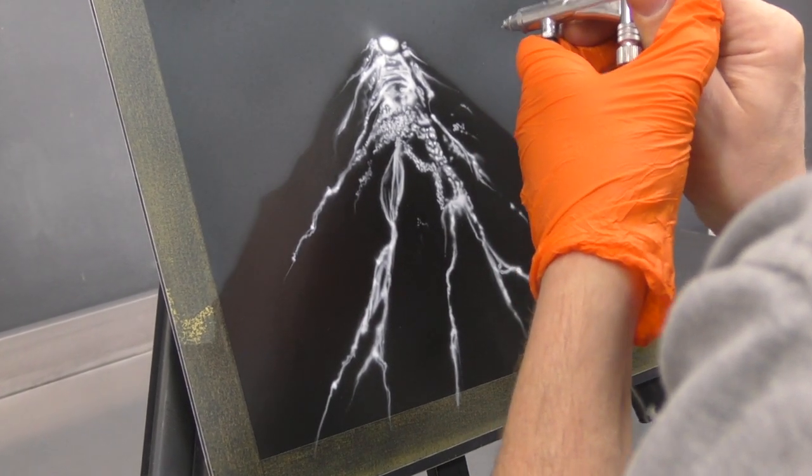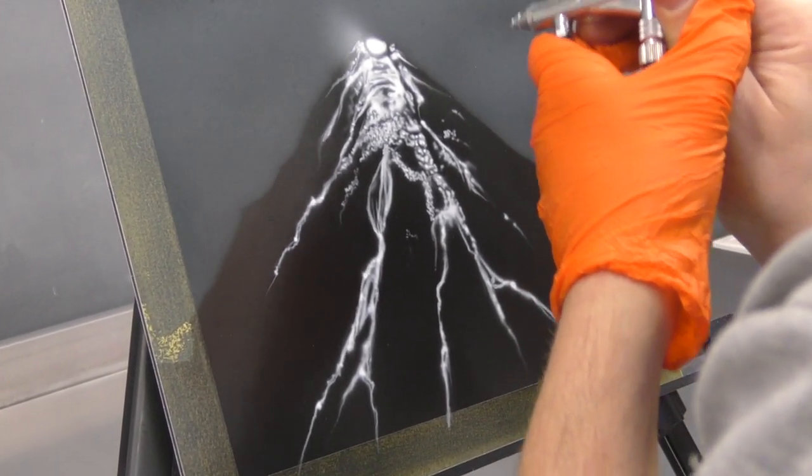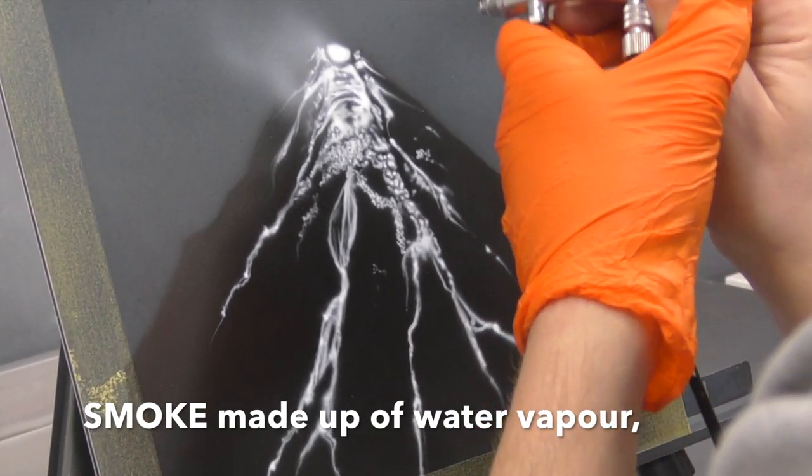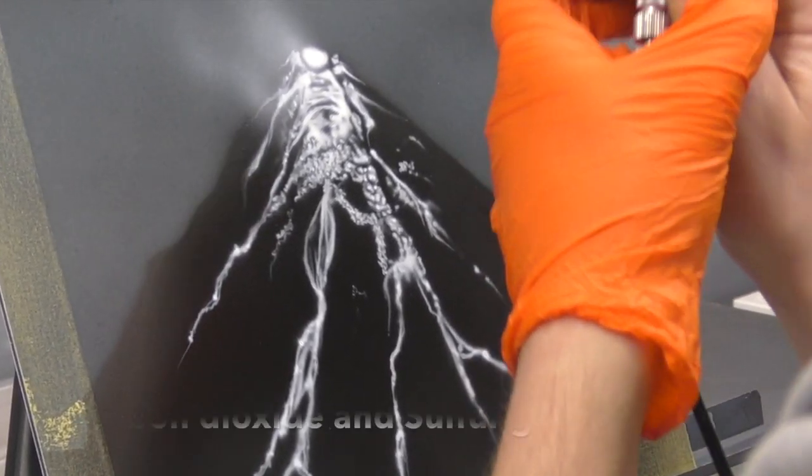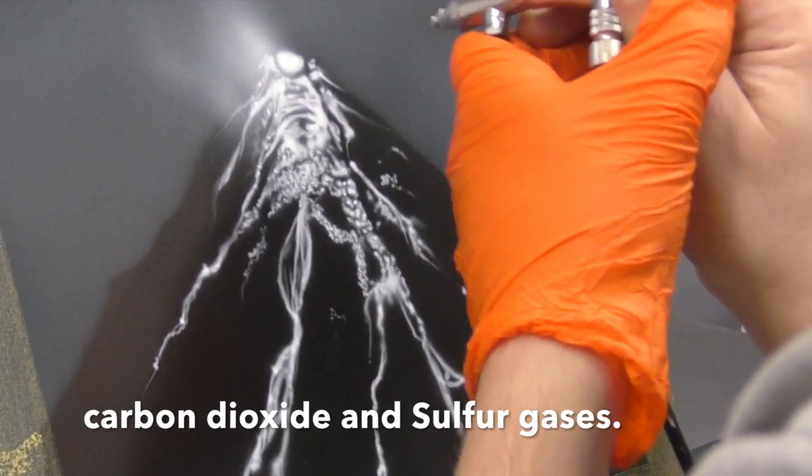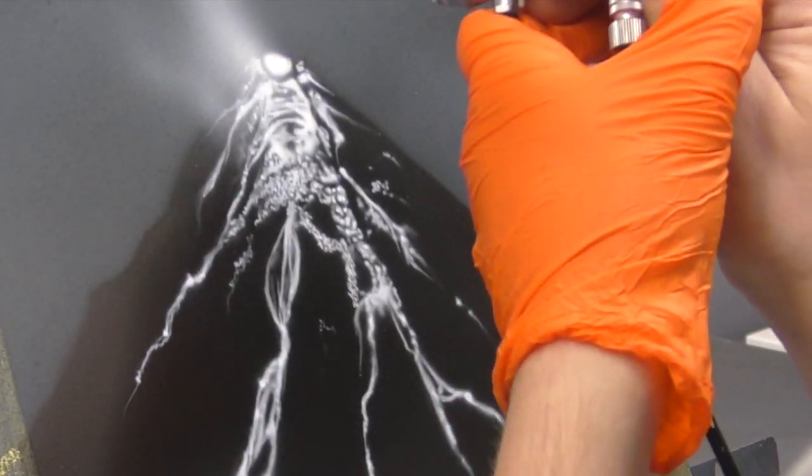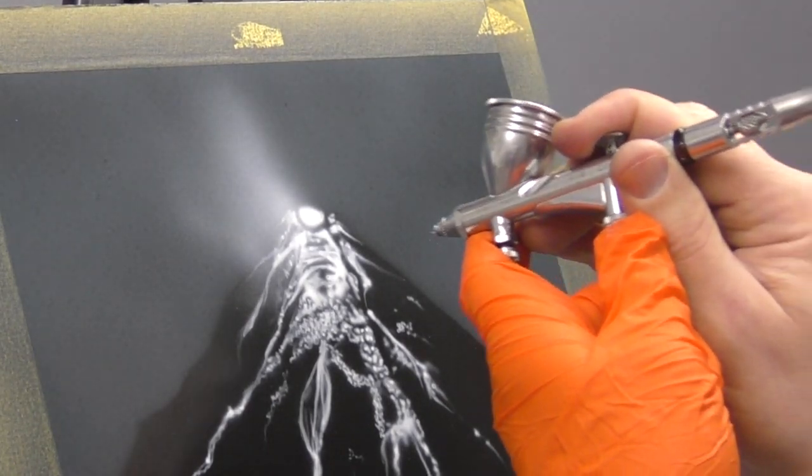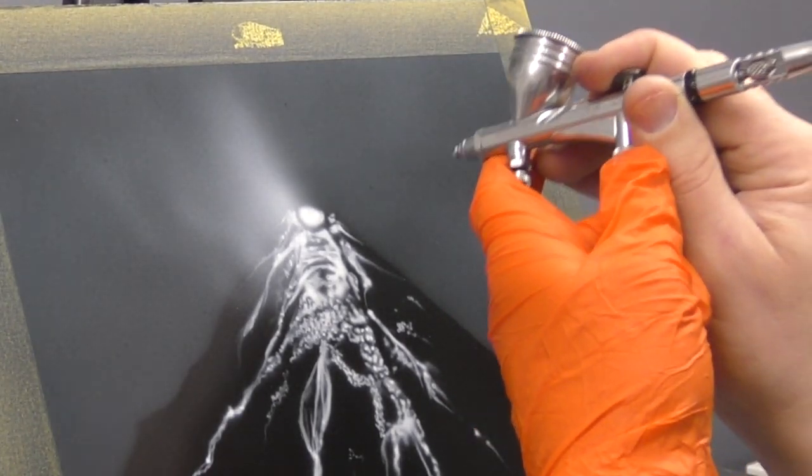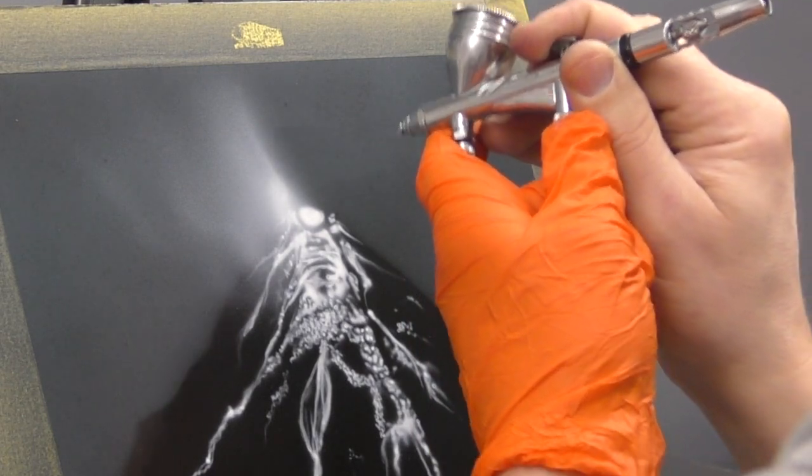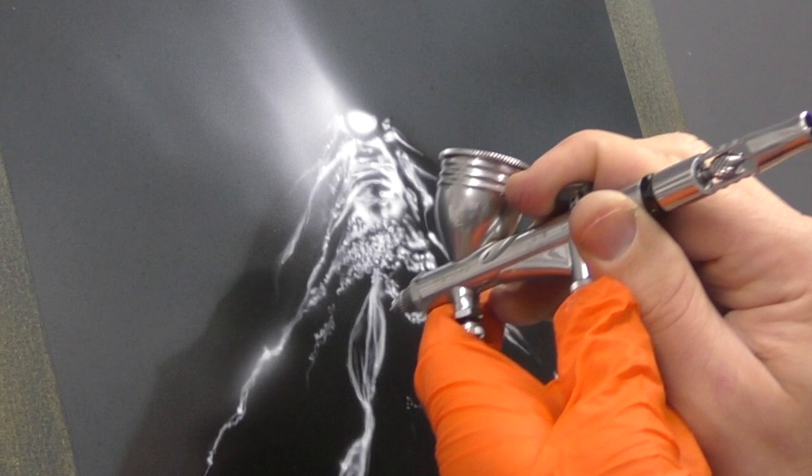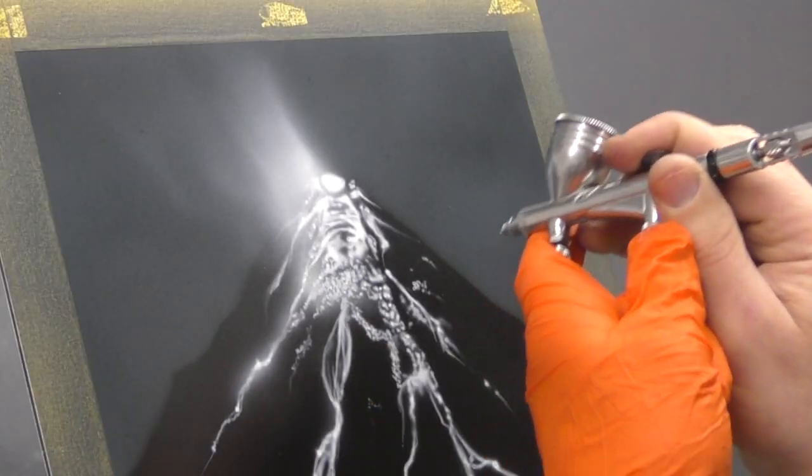I'm also just dusting some gas coming off the top of that volcano. And this is just done by using the white and lightly blending it out. And I'm doing that from a distance. You can sharpen up a couple of areas and we can also bring in a bit of that coming off certain areas of the lava. Using the overspray to create the illusion.